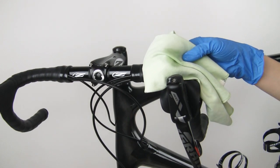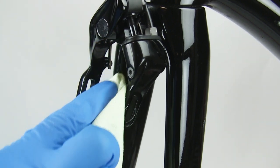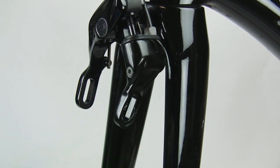Use isopropyl alcohol and a clean rag to remove any brake fluid from the lever and caliper. Make sure to clean around the lever bleed port screw.